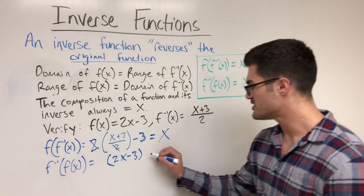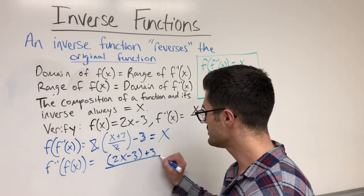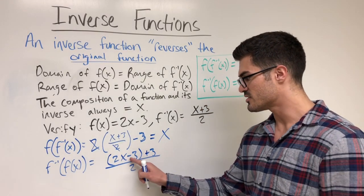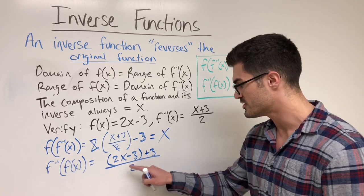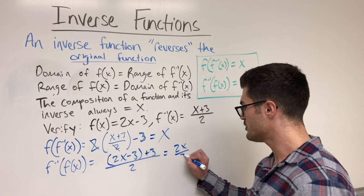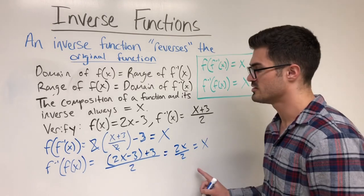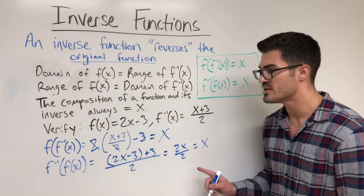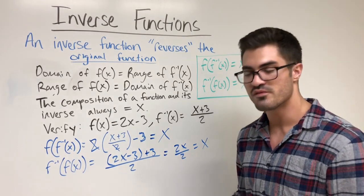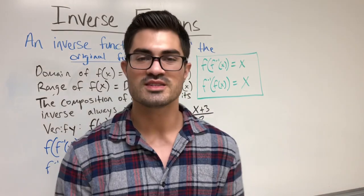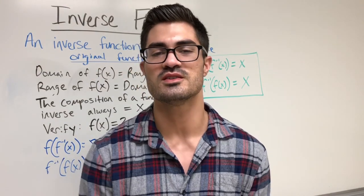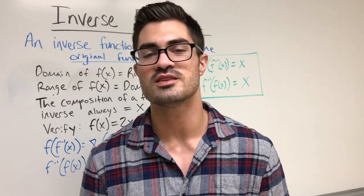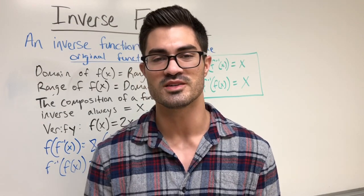I have (2x minus 3 plus 3) all over 2. Since this is subtraction and addition, I can drop the parentheses and I'm left with 2x over 2, which is just x. In both cases I got x, which confirms they are indeed inverses of each other. Stay tuned for part 2 where we'll continue with more examples. Hit like, subscribe, leave questions in the comments, and keep flexing those brain muscles!